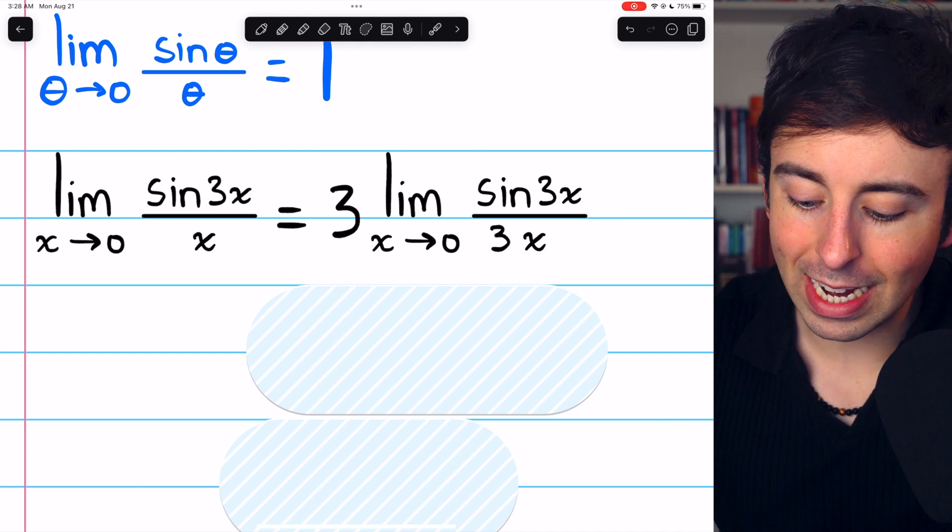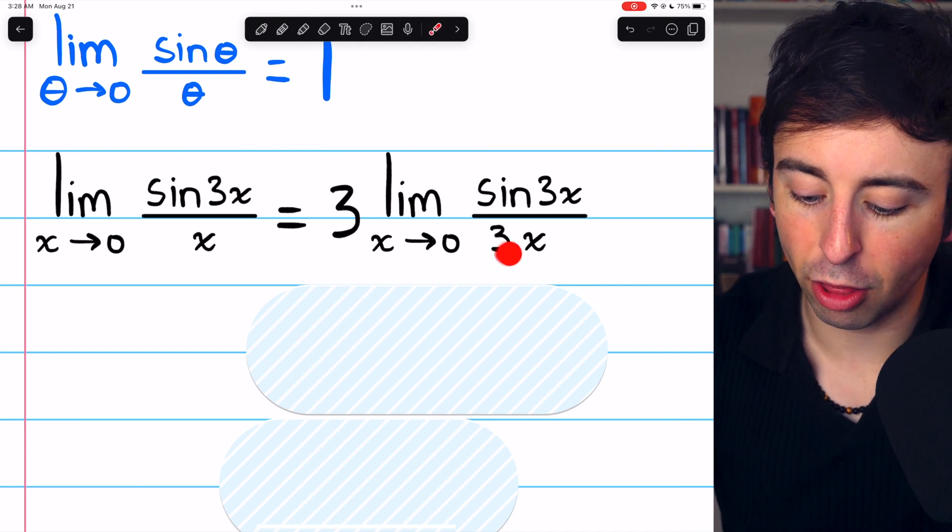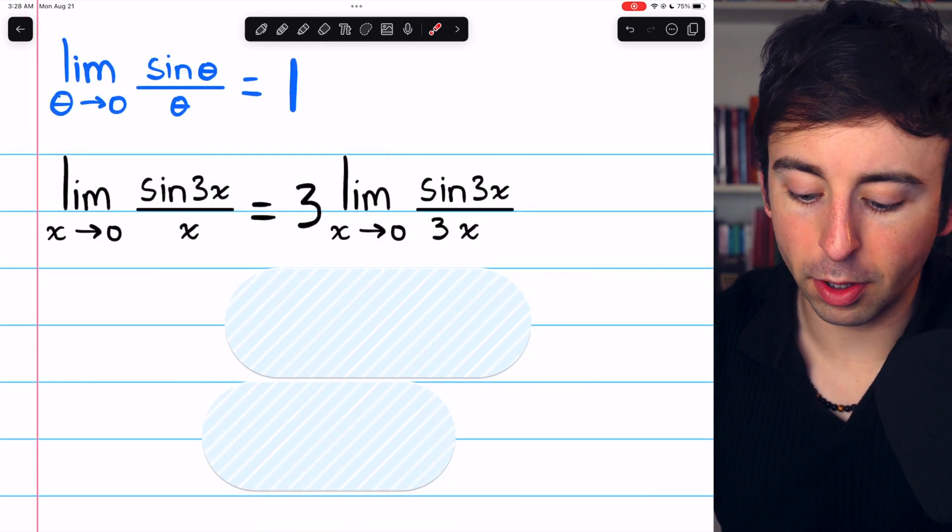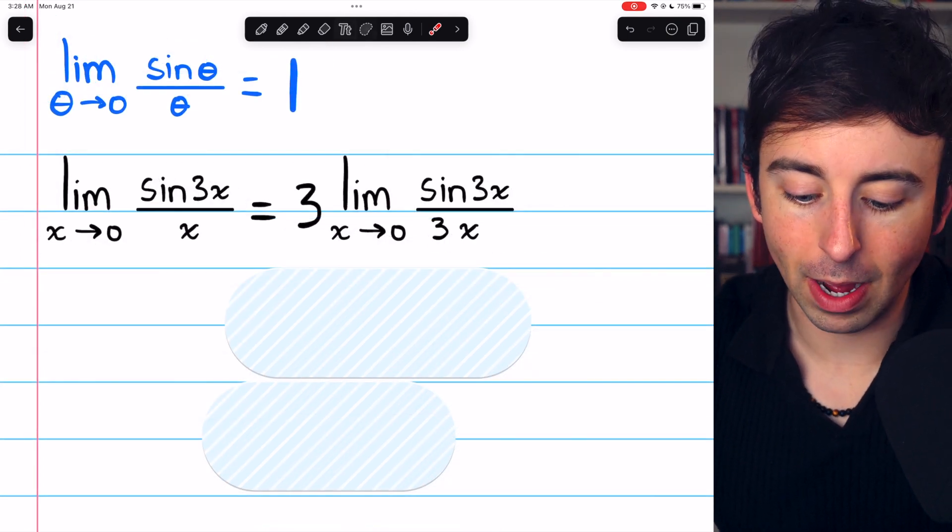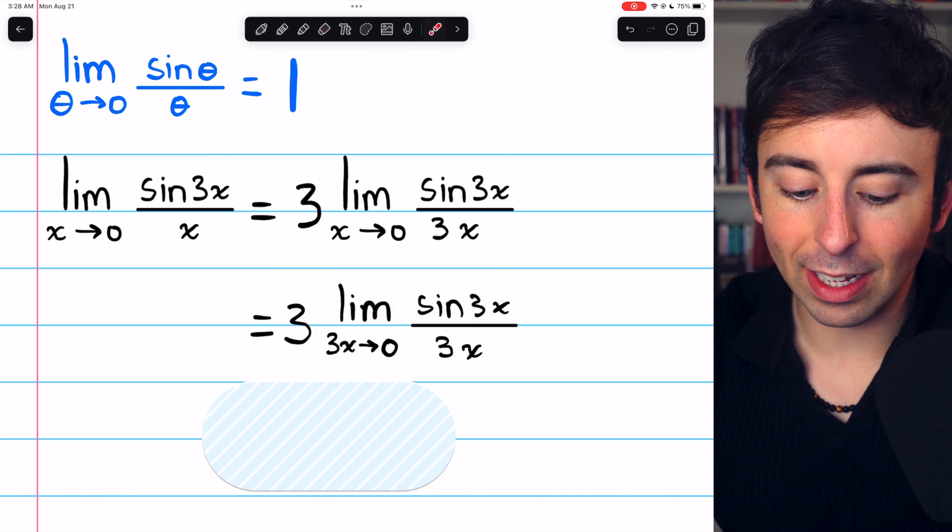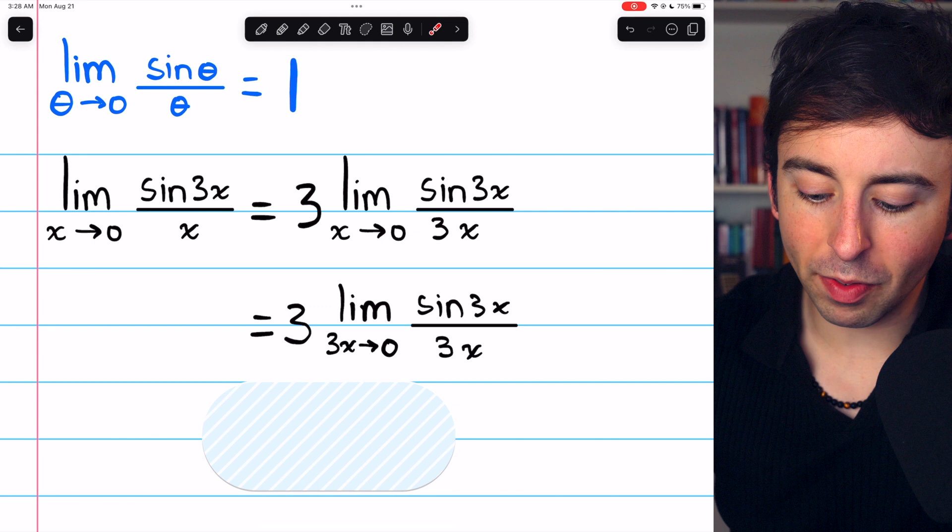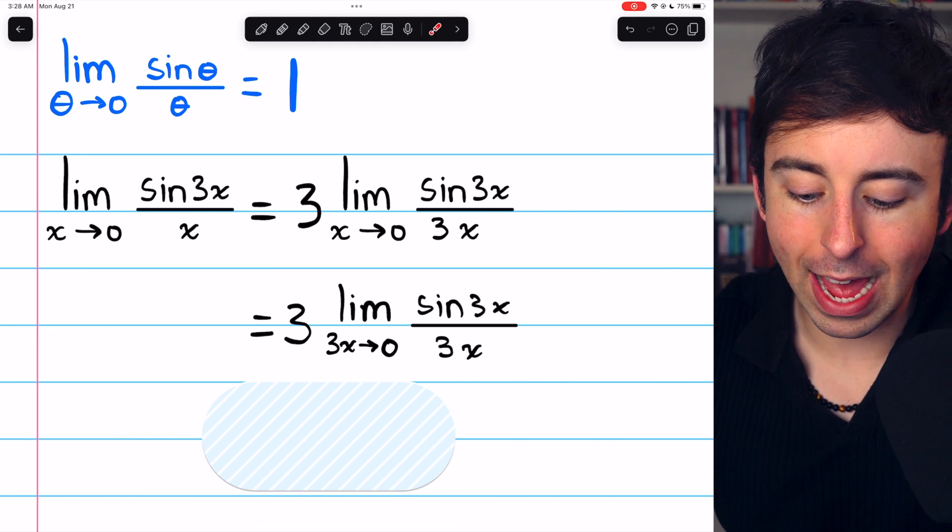Bringing the factor of 1 third in the limit looks like that, a 3 in the denominator. Again, we haven't changed the limit at all. We just multiplied by 3 and divided by 3. But now, we can start to think about our well-known limit. Because we've got sine of 3x over 3x.